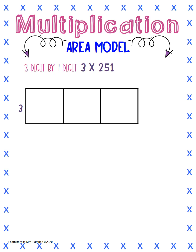We will put the three to the left, our smaller number, on the outside, and then we're going to break up our 251 into place value across the top. So that will give us 200 plus 50 plus 1.